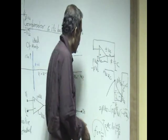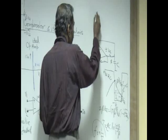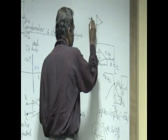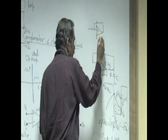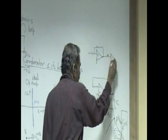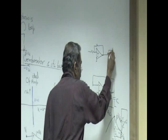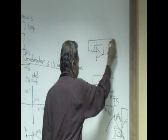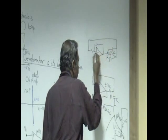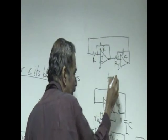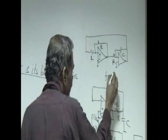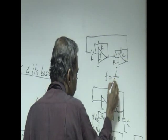Same thing can be done by using what is called a non-inverting Schmitt trigger and an integrator and you can prove that the frequency of oscillation, this is left as an exercise for you, F is equal to 1 by 4 RC.